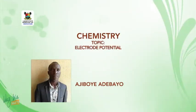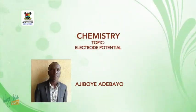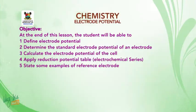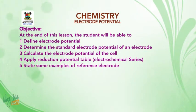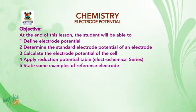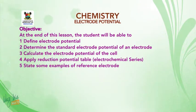Good day students. My name is Ajibo Iadebayo. You are welcome to another chemistry session. Today's topic is Electropotential. At the end of this lesson, the student will be able to: 1. Define Electropotential. 2. Determine the standard electropotential of an electrode. 3. Calculate the electropotential of the cell. 4. Apply the Reduction Potential Table, also known as the electrochemical series, and state some examples of reference electrode.